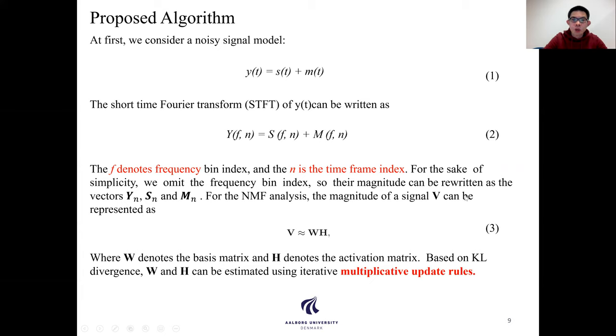In general, for NMF analysis, the magnitude of a signal V can be represented as W multiplied by H, and equation 3 shows this process.